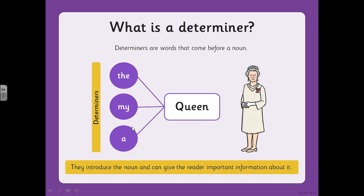Three that I thought of were: the, my, and a. So if you're talking about the queen you could say 'the queen', you could say 'my queen', or you could say 'a queen'. They introduce the noun and they can give the reader important information about it.